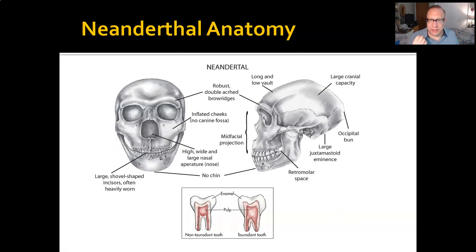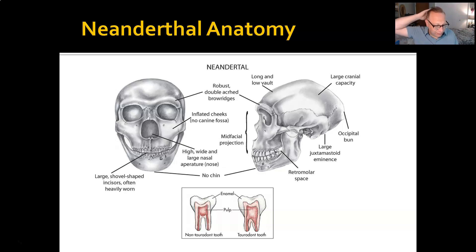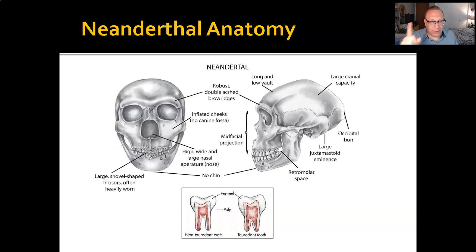They have shovel-shaped incisors, quite large, often showing wear as if used as tools. They have a long, low cranial vault but with very large cranial capacity—some of the largest at around 1,700 cc's; modern humans average about 1,350 cc. They have an occipital bun—a prominence on the back of the skull; I actually think I might have one. They have a large juxtamastoid eminence, a space behind their rear molars, and no chin. Only Homo sapiens have chins.